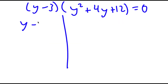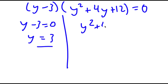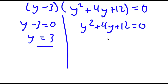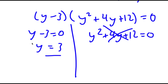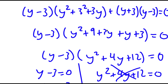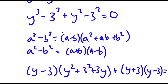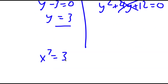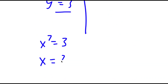This gives me two equations: y minus 3 equals 0, so y equals 3, and y squared plus 4y plus 12 equals 0. Using the quadratic formula on the second equation, the discriminant is less than 0, so it has no real solutions. Therefore y equals 3 is the only solution. Since we let x to the power of 7 equal y, I now have x to the power of 7 equals 3, meaning x is equal to the seventh root of 3.